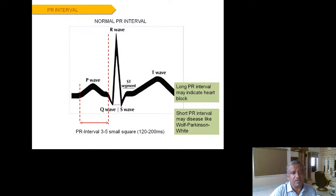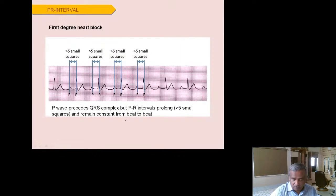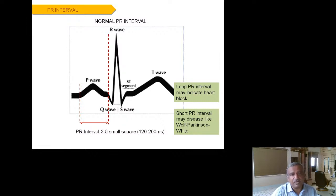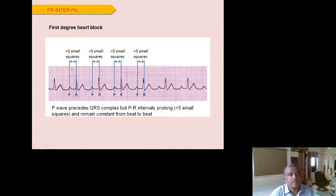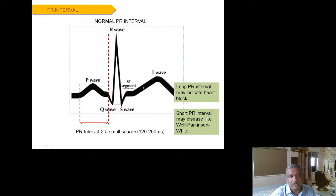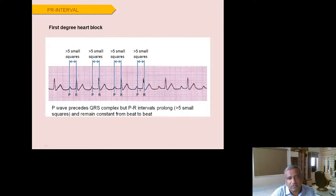The PR interval is measured from the beginning of the P wave to the end of the R wave — normally 3 to 5 small squares, equaling 120 to 200 milliseconds. The PR segment is always isoelectric. If the PR interval exceeds 5 small squares (more than 200 ms), this is a prolonged PR interval, also called first-degree heart block.